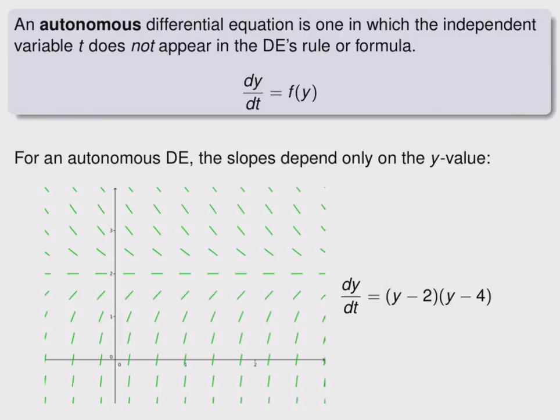For an autonomous DE, the slopes depend only on the y value. In this slope field for an autonomous DE, by looking along a horizontal line, we can see that the slopes don't change because t does not come into the formula that tells us the slope.